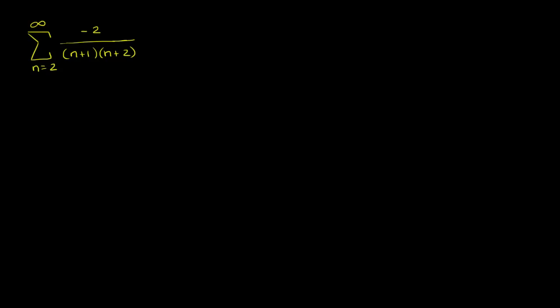What we're going to attempt to do is evaluate this sum right over here — evaluate what this series is. Negative 2 over (n+1)(n+2), starting at n equals 2, all the way to infinity.